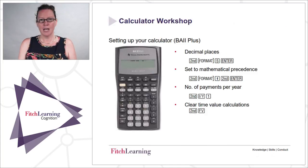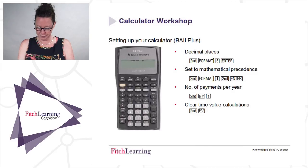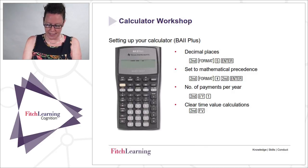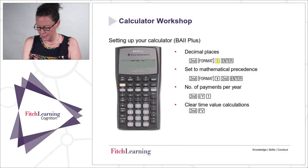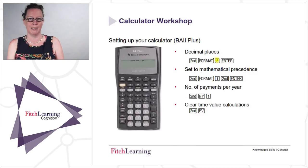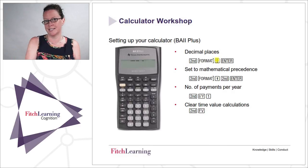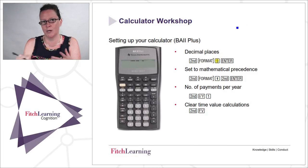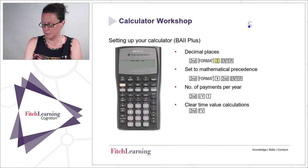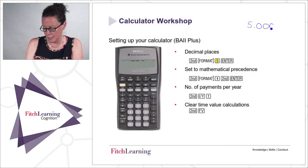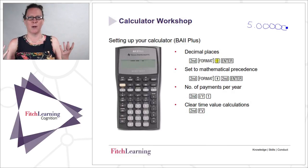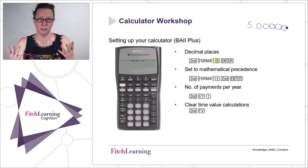When setting up the calculator, the first thing to think about is the number of decimal places you would like it to work to. The CFA Institute works their numbers to five decimal places, so it's useful to set your calculator to that. The only problem is if your answer happens to come out as a whole number like five — if you've set it to five decimal places, it will read as 5.00000, so the numbers can get quite big.